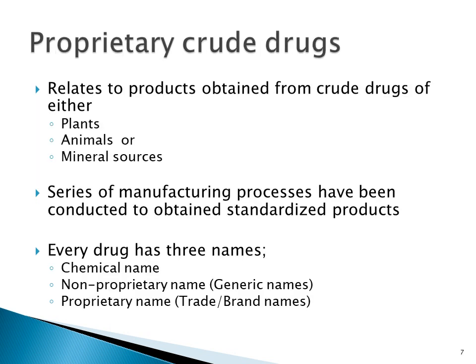Proprietary crude drugs relate to products obtained from crude drugs, which may be from plants, animals, or mineral sources. These products are obtained following a series of manufacturing processes to arrive at standardized herbal products. It is important to know that every drug has three names: the chemical name, the non-proprietary name (also known as the generic name), and the proprietary name (also known as the trade name or brand name).